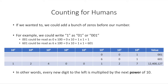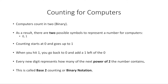Computers can only deal with two values — on and off — so they can only count with two symbols. We use 0 and 1 for those. Counting starts at 0 and goes up to 1; when you hit 1, you go back to 0 and add a 1 to the left. Each new digit to the left represents the next power of 2 — so instead of powers of 10, it's powers of 2. This is called base 2 counting, or binary notation.